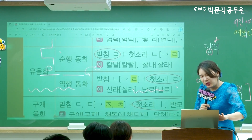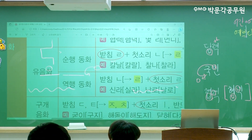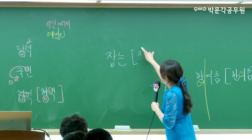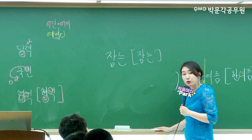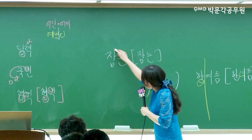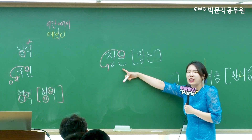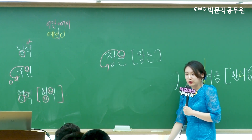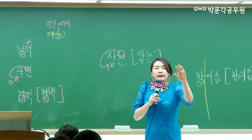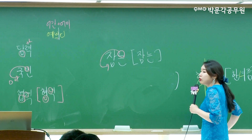환경을 외우는 것보다 단어를 딱 봤을 때 발음을 해보고 판단하면 되는 거예요. 예를 들어 '잡는'을 발음해보면 [잠는]이죠. 무슨 동화가 일어난 거예요? 비음동화예요. 동화 원인이 뒤에 있는 니은이므로 역행 비음화입니다. 저는 발음을 해보고 판단하는 걸 추천드려요.